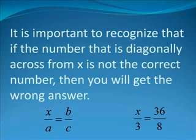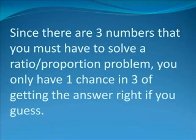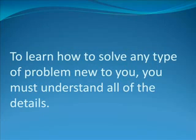It is important to recognize that if the number that is diagonally across from X is not the correct number, then you will get the wrong answer. Since there are three numbers that you must have to solve a ratio proportion problem, you only have a one chance in three of getting the answer right if you guess.